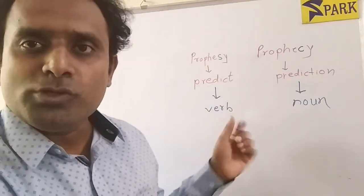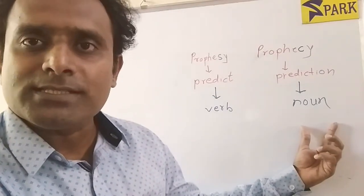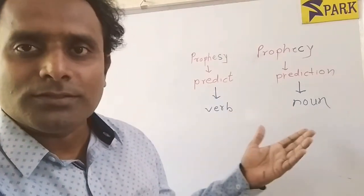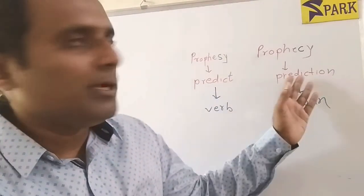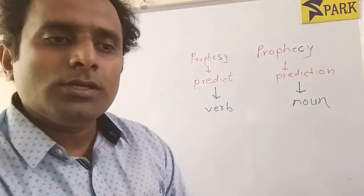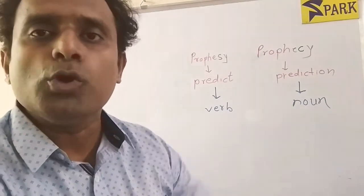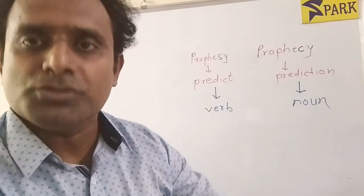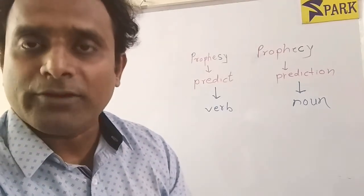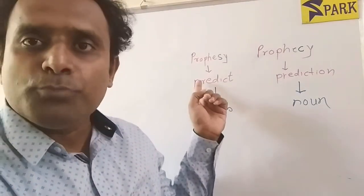Prophesy is used as a verb and prophecy is used as a noun. Prophesy means to predict — it is used as a verb — and prophecy means prediction — it is used as a noun. For example, if I say I am predicting a good monsoon or a good harvest, then I will say that I am prophesying.